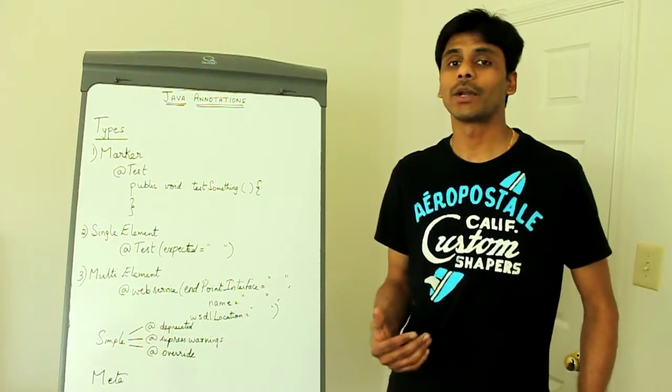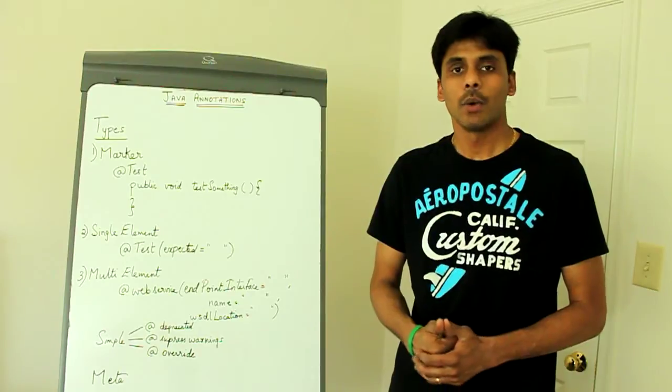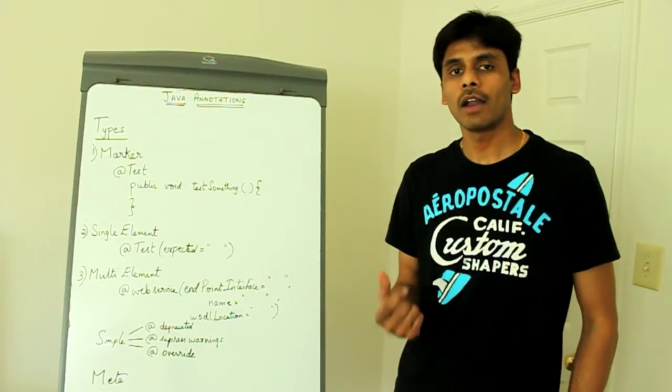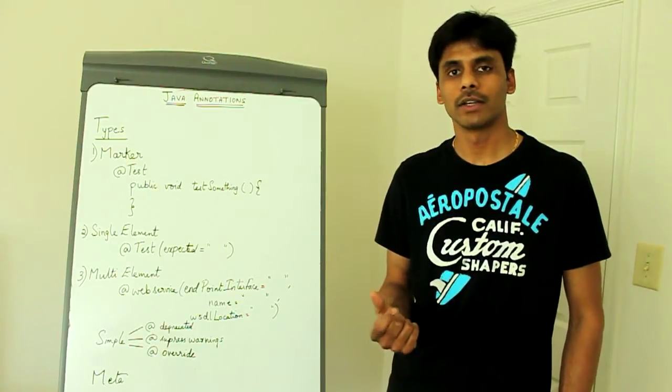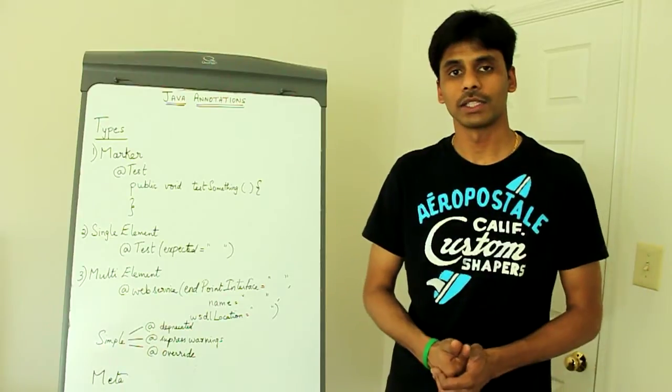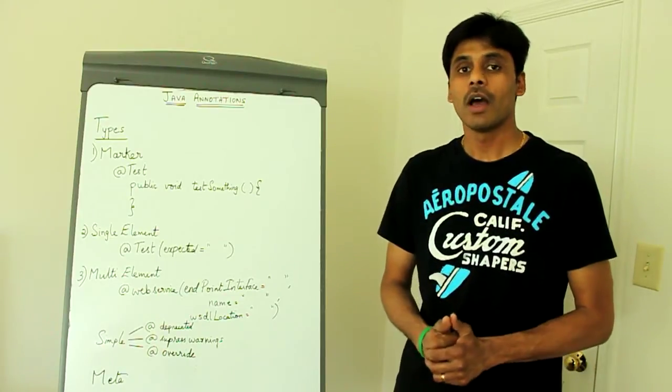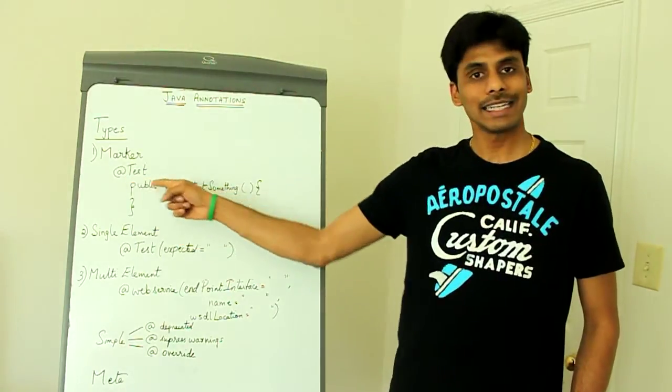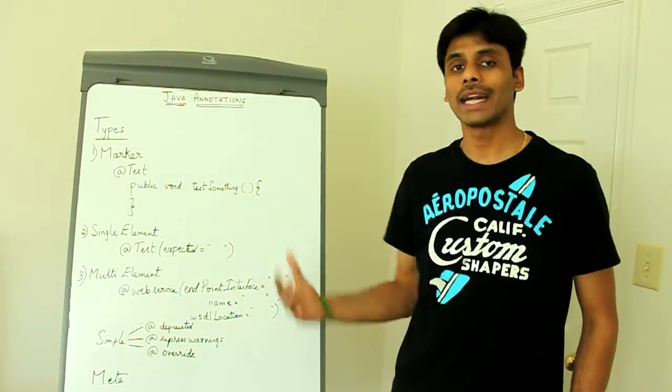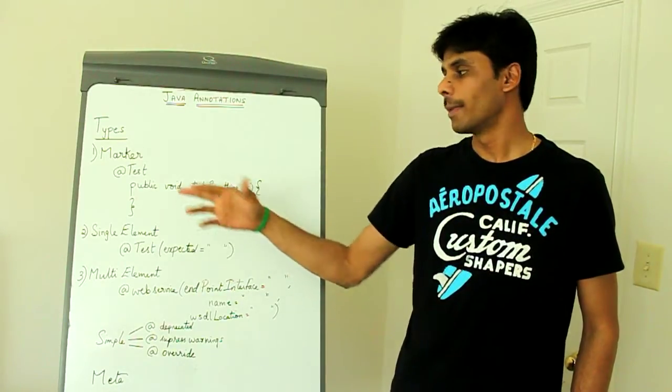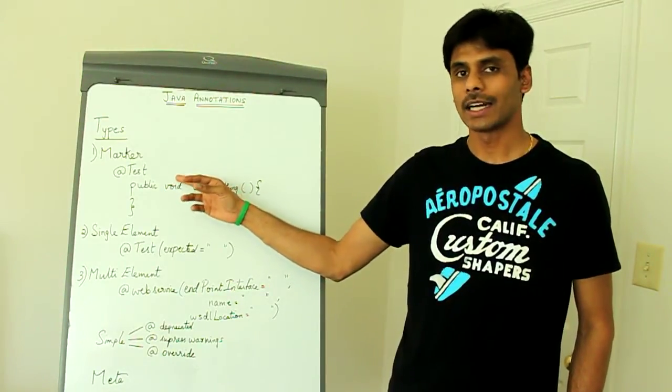Before JUnit 4, if we had to write a JUnit test class, we had to inherit a JUnit test case and all our test methods should be prefixed with the test keyword so that the JUnit framework knows that the methods are test methods. But starting JUnit 4, all we need to do is mark our test methods with the at test annotation. And at runtime, the JUnit framework knows that a particular method is a test method by looking at this marker annotation.